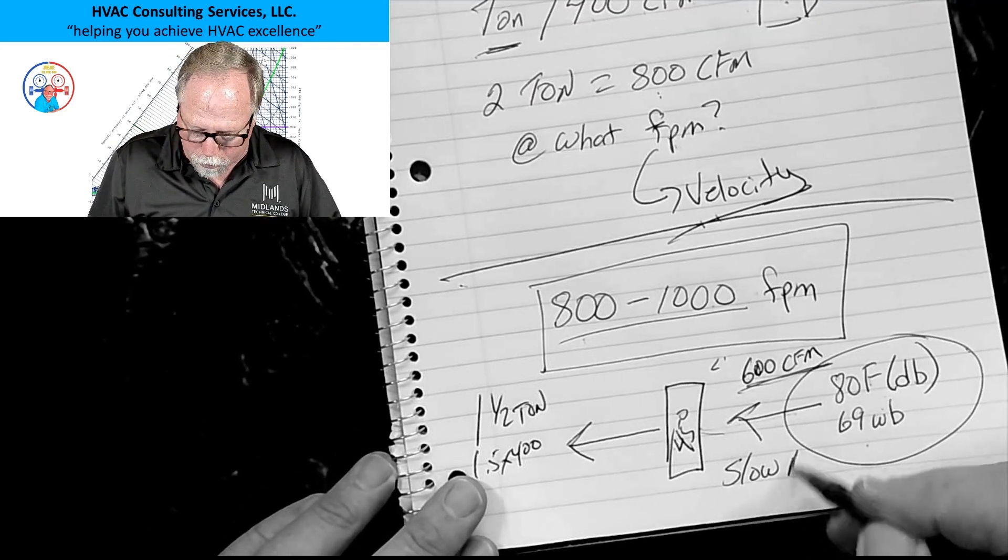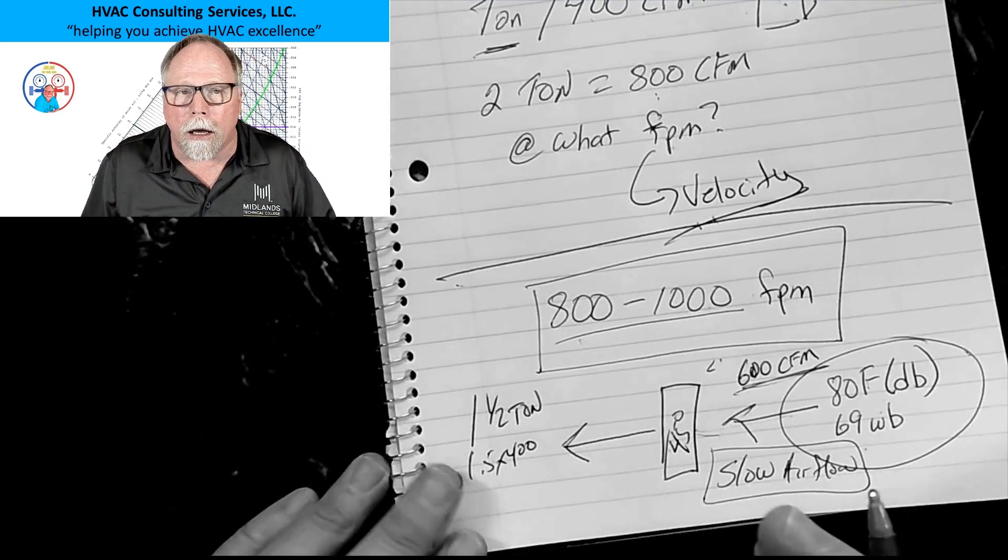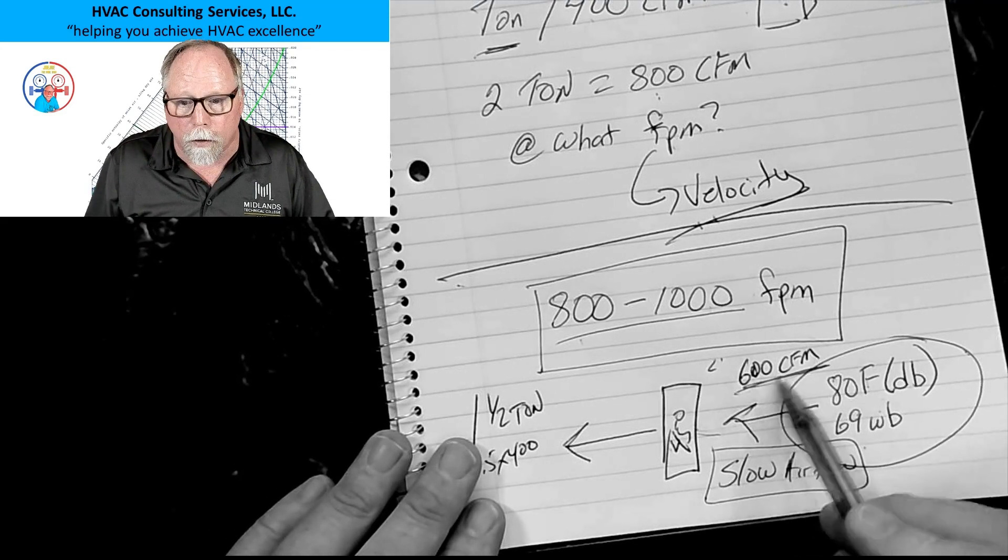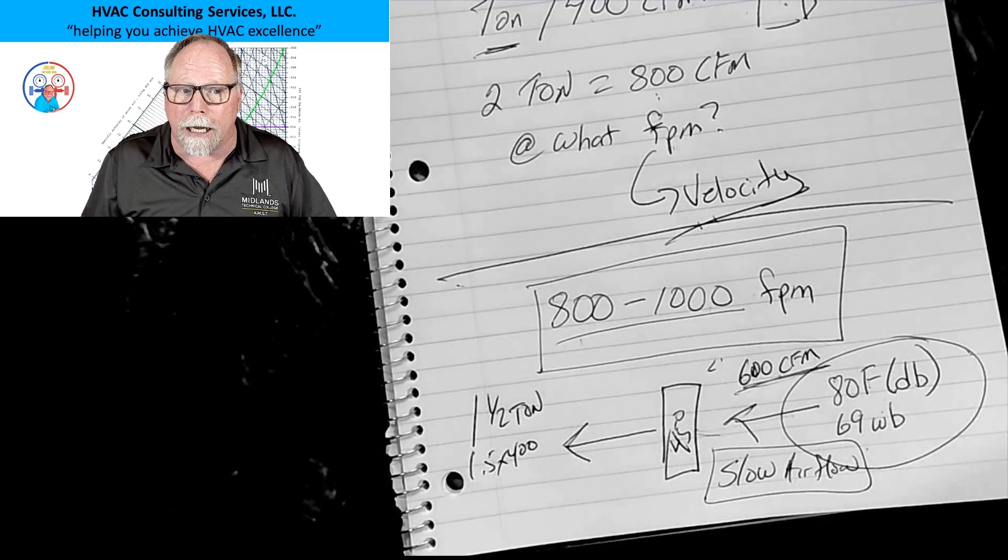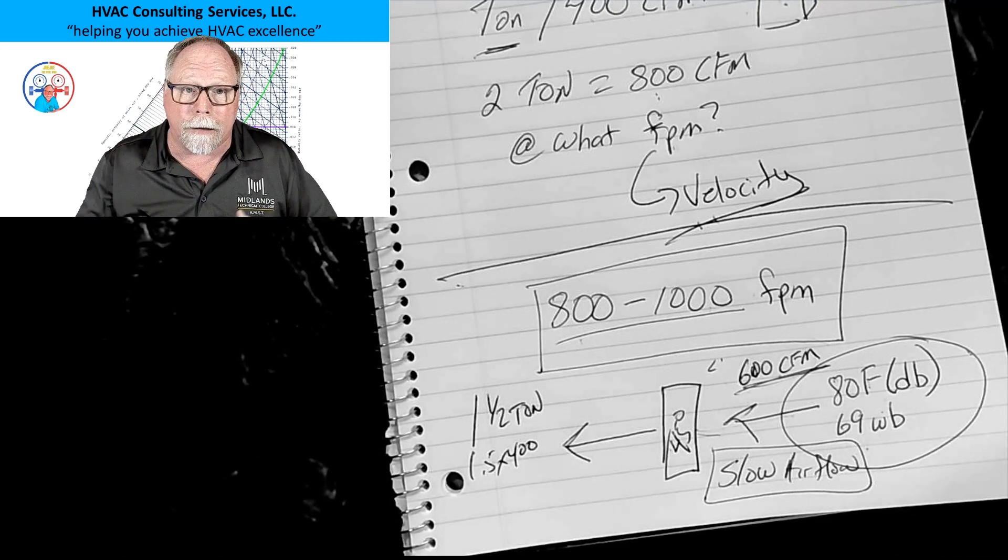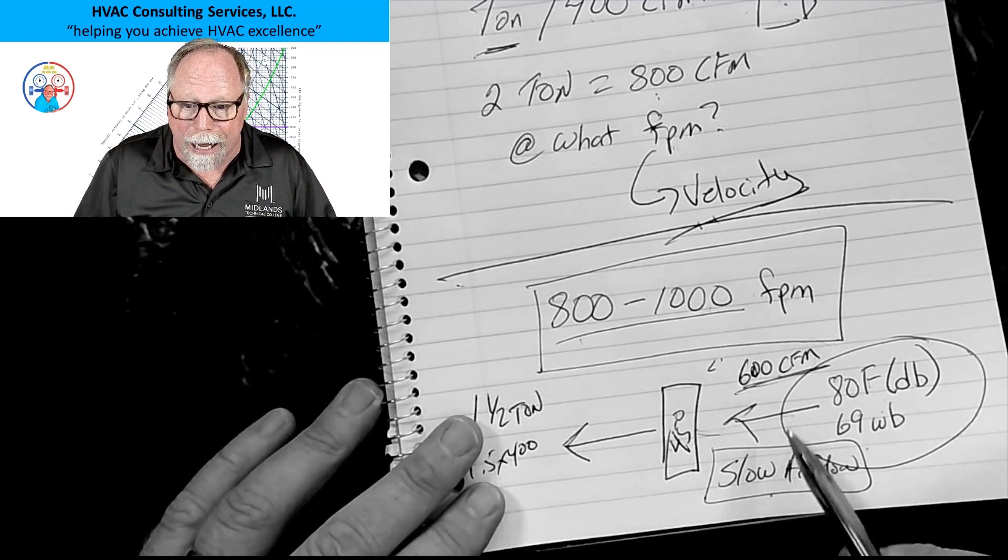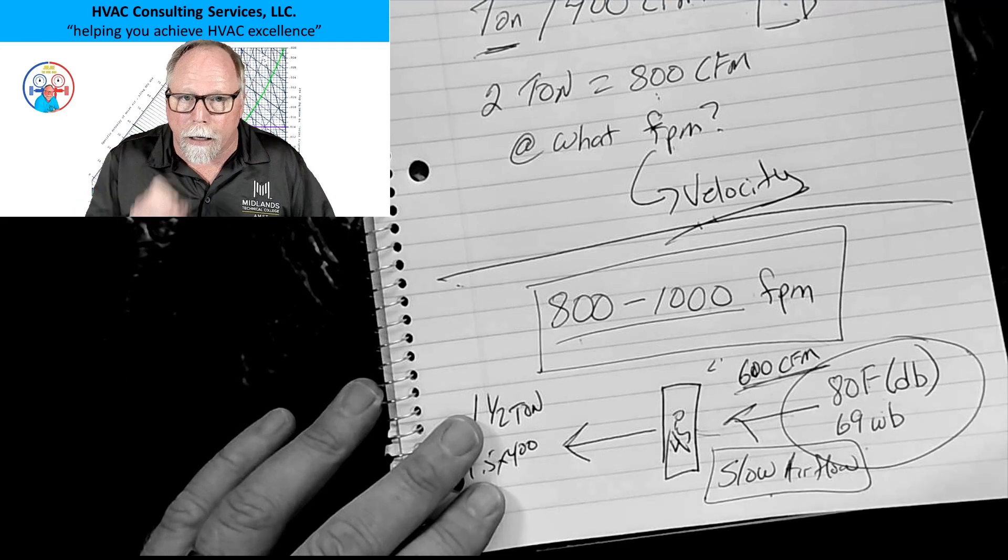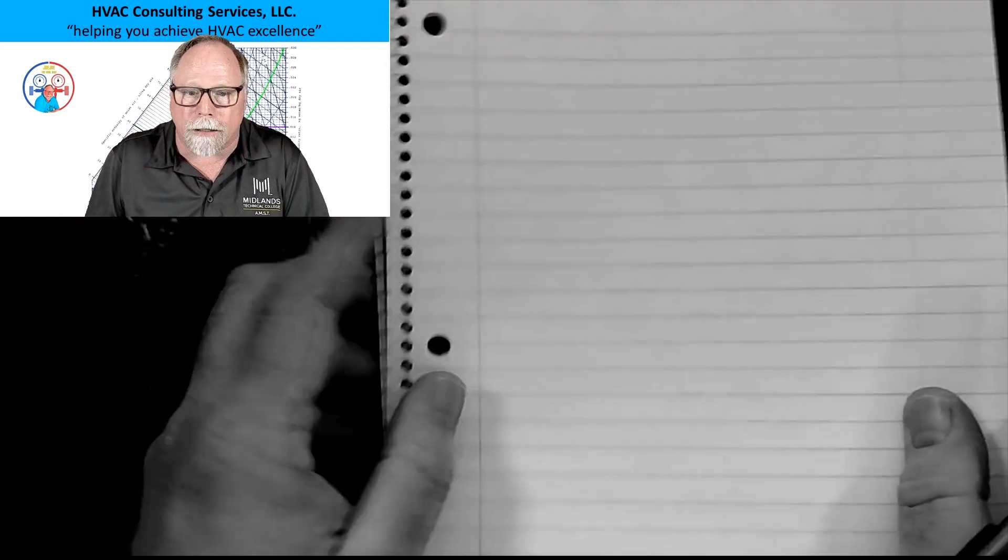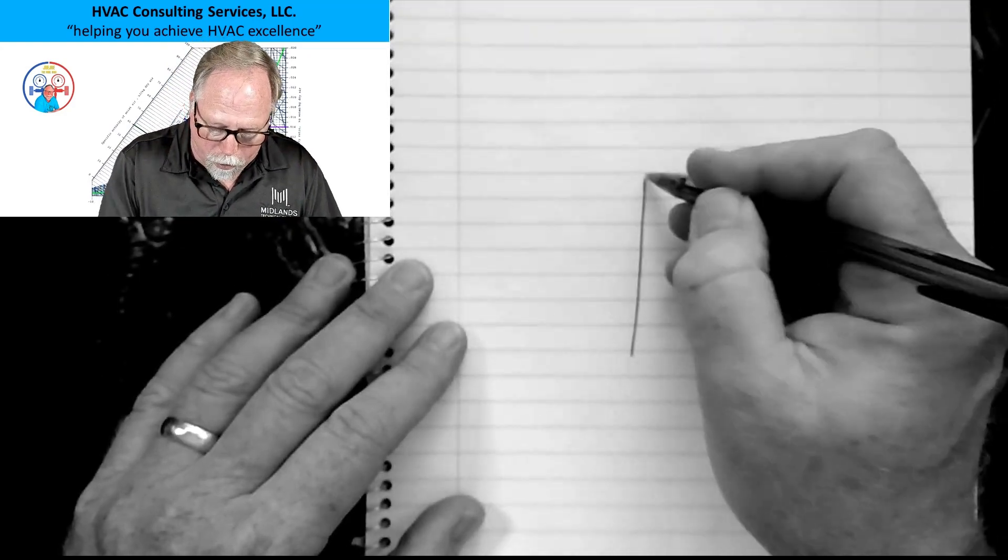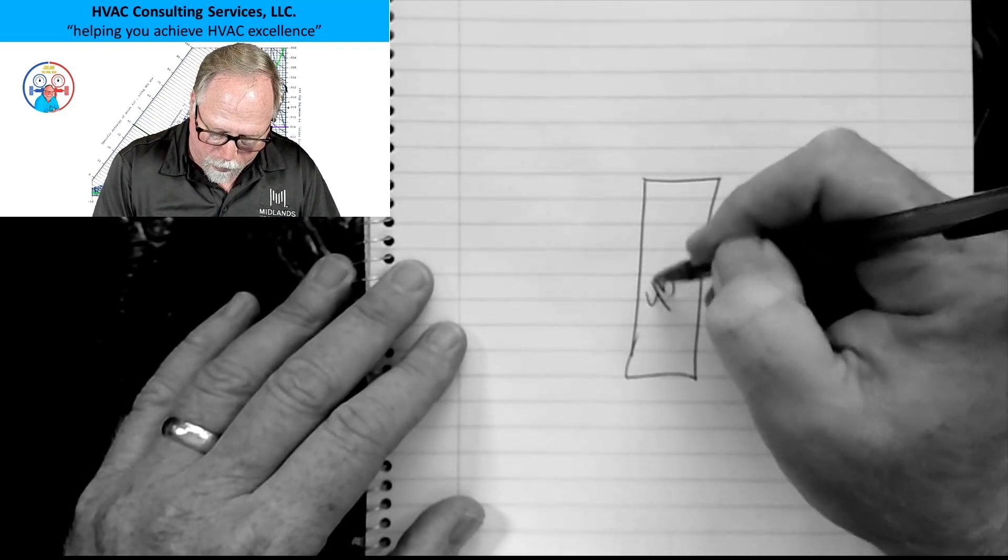If you've got too much air, we're not going to get enough capacity. We're going to be overrunning the unit. If we have too little air, we'll freeze the coil up. But what about if we've got the right quantity and we're moving it too slow? So let's say instead of 800 feet per minute, we put that bad boy down and drop it down, and we get that airflow slow, but we've got the right quantity. That's really not a big deal.